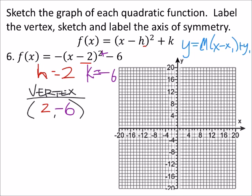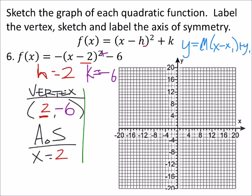All right. Well, we got our vertex. Our axis of symmetry is at where X is this X value in the vertex. So X is 2. And bam, we got those two. So let's go ahead and graph those.